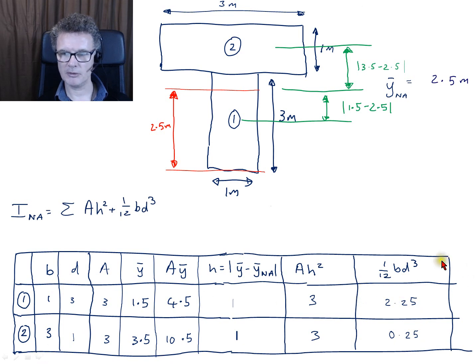To find your second moment of area, we're going to add up everything in these two columns. Our A*h² plus our bd³/12 - we're going to add up all these columns. So we're going to have 3 plus 3 plus 2.25 plus 0.25, add them all up, and we're going to get a second moment of area of 8.5 meters to the power 4.